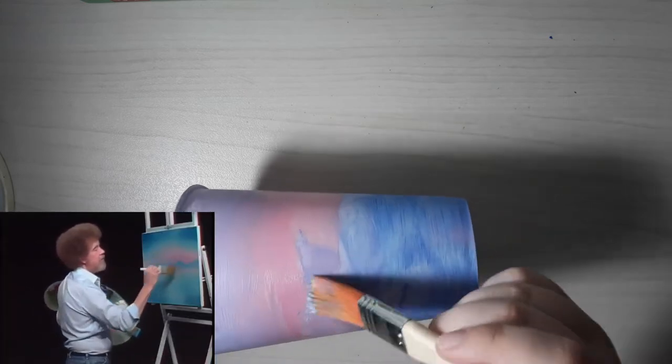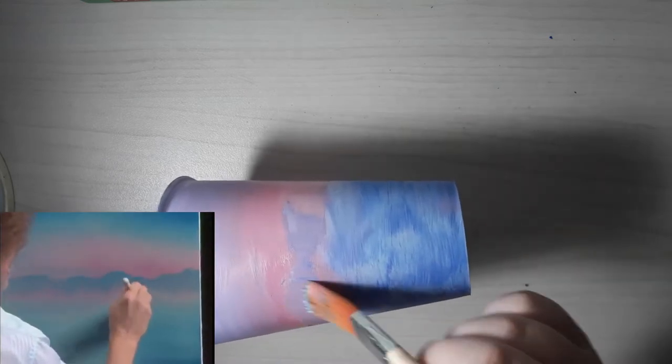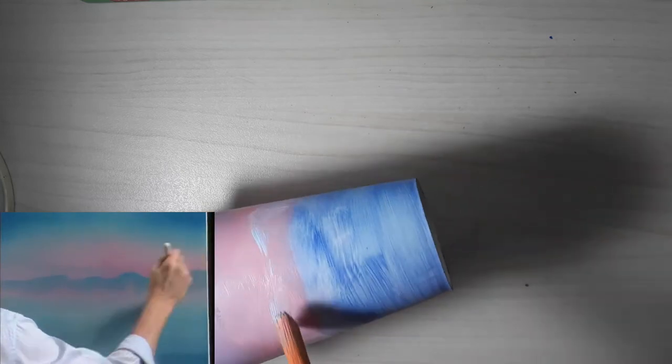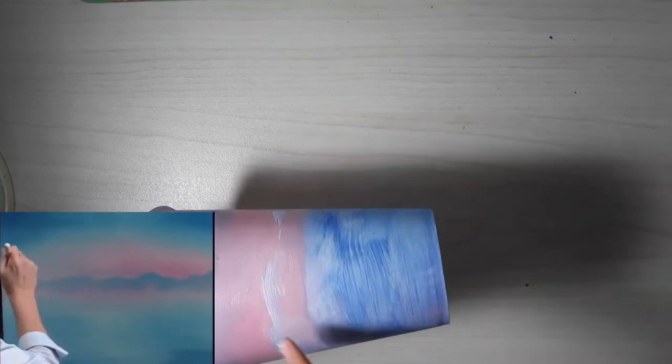You could even take another two-inch brush, and I have several, and tap it. Really get in there and tap it, and then lift upward. It'll help create that illusion of mist right down at the bottom.